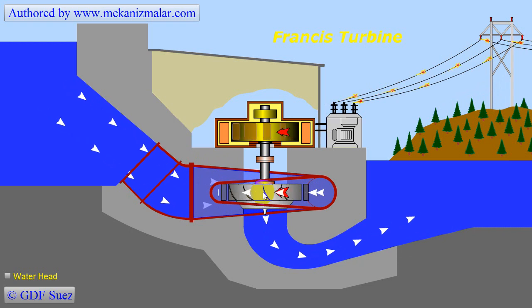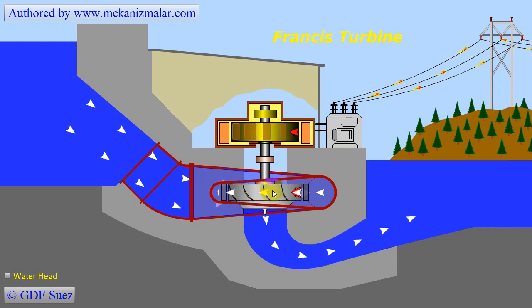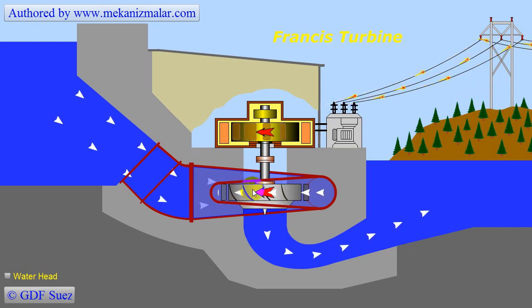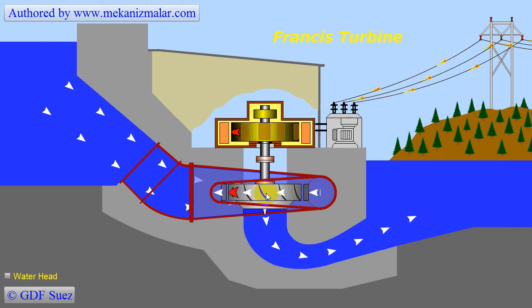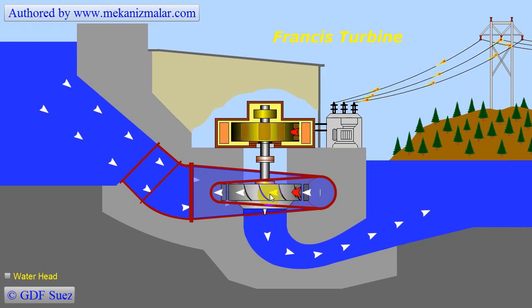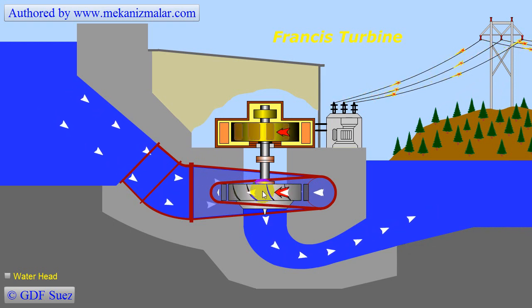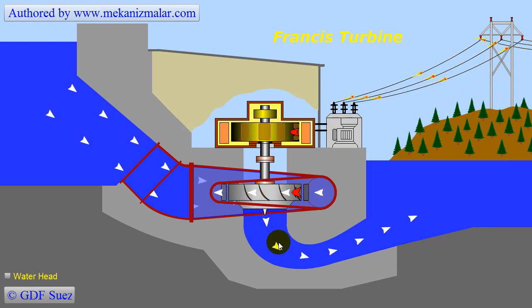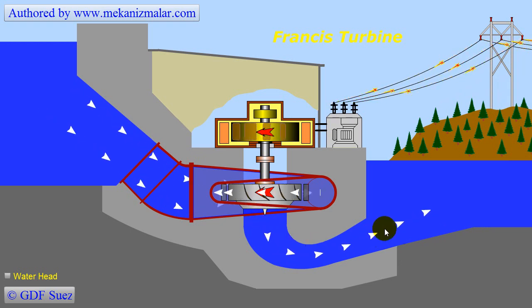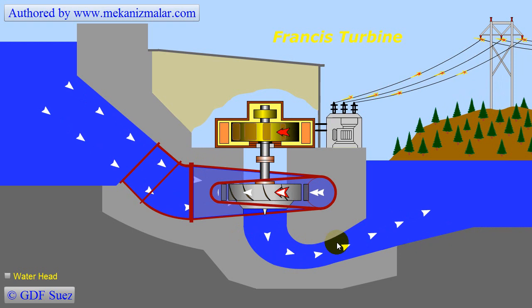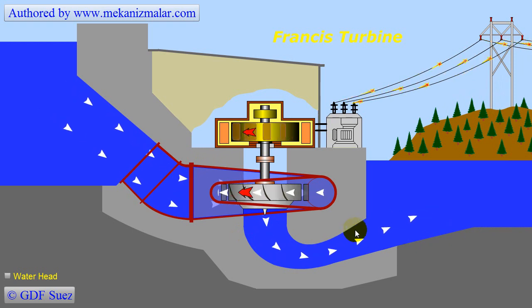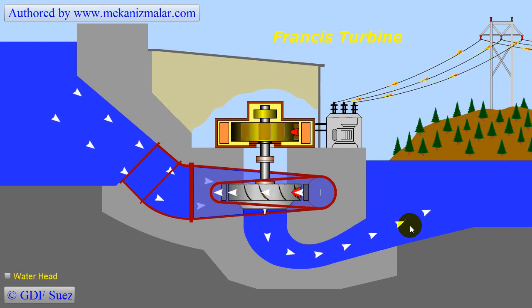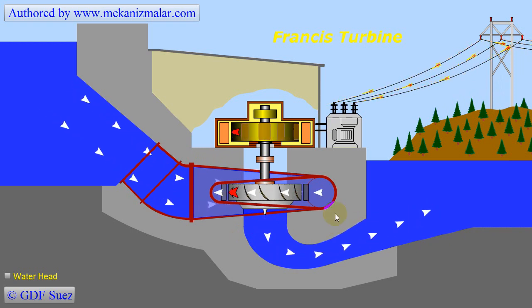The water pressure forces the runner to rotate. The rotation speed of the runner can be in the range of 80 to 1000 RPM. The water continues its motion downward under the runner to the exit pipe, which discharges the water to the environment as low-pressure water.